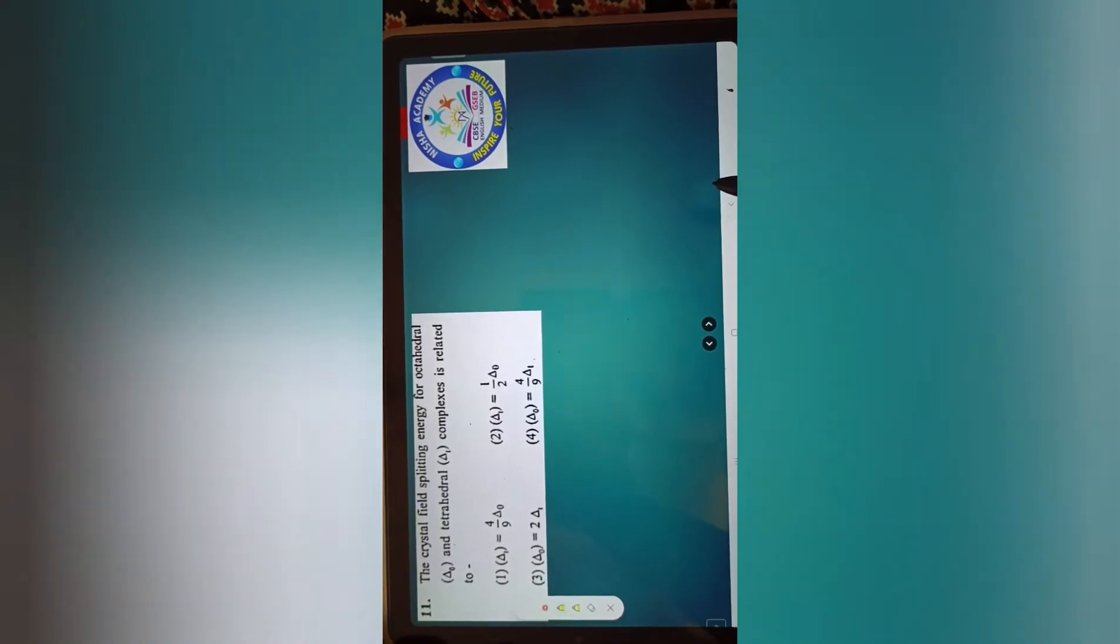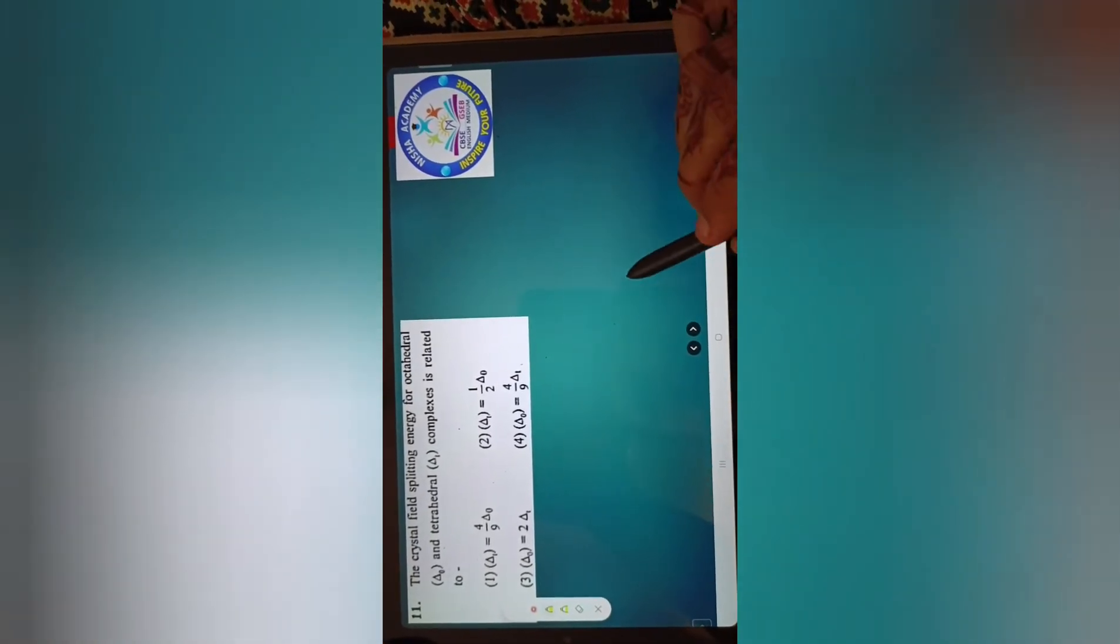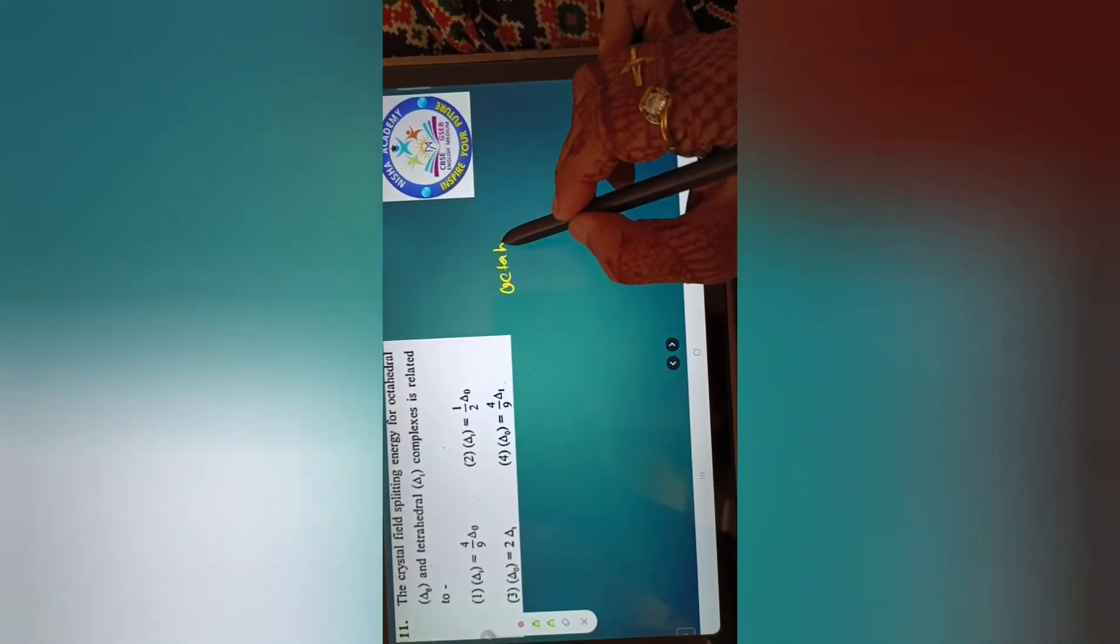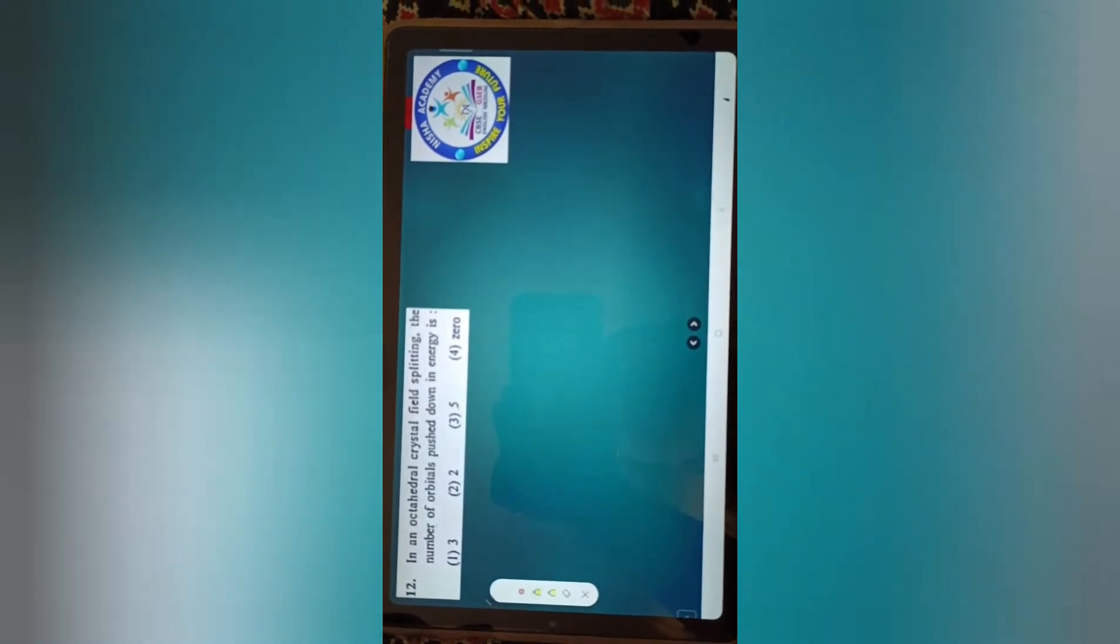Crystal field splitting of octahedral and tetrahedral complexes is related. In octahedral, what's the ratio? 3/5 above and 2/5 below. In tetrahedral, it's the reverse. Yes, 4/9. Next - in an octahedral crystal field splitting, the number of orbitals pushed down in energy is three. Very good, yes.